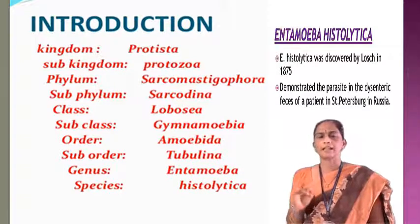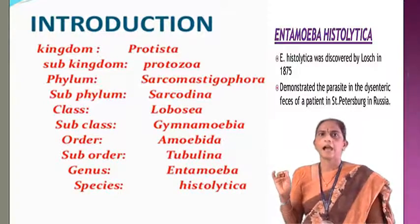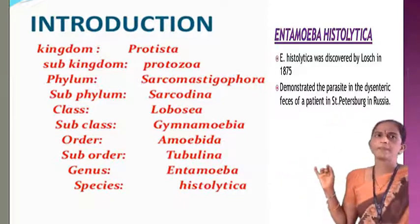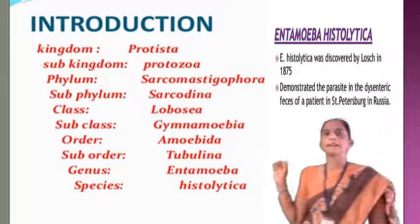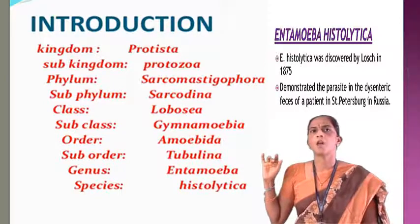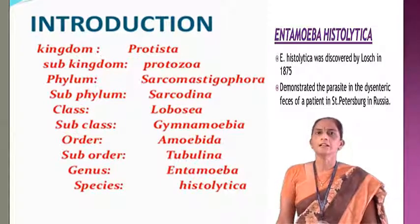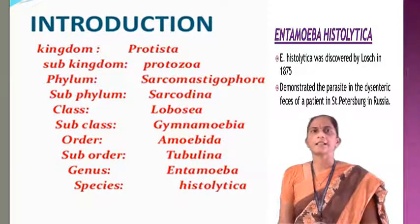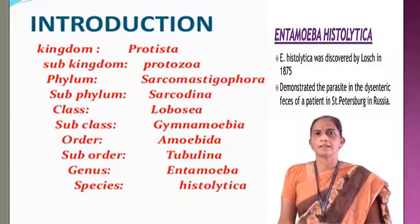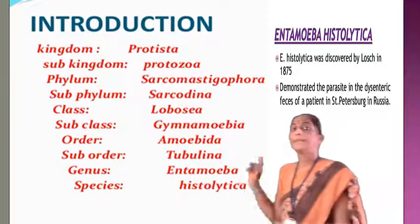So Entamoeba histolytica causes Amoebiosis — it is a protozoan disease. The full name of Amoebiosis is Amoebic dysentery. It was first discovered by a scientist called Losch. Amoebic dysentery is an old name, but nowadays we call it Amoebiosis. It can be transmitted through dogs, cats, and primates.